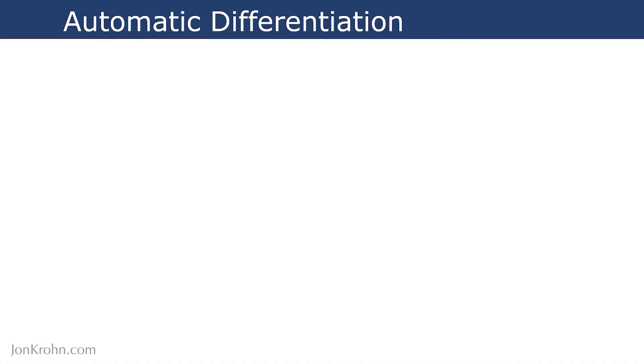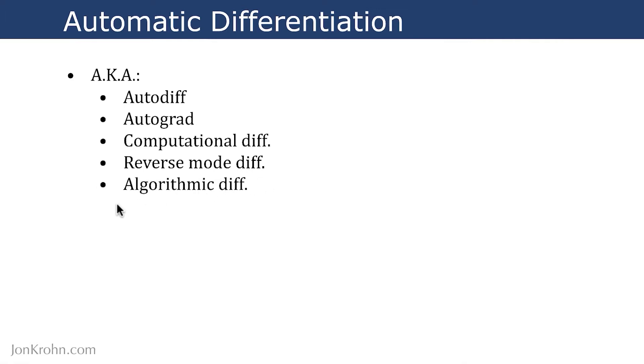Automatic differentiation goes by many names. It's also known as autodiff for short, that one's easy to see from the full name. But it's also known as autograd because it's heavily involved in calculating gradients in machine learning, and we will talk about that a lot in this video series. We can also call it computational differentiation, reverse-mode differentiation, or algorithmic differentiation.